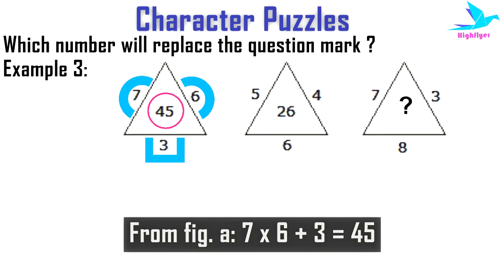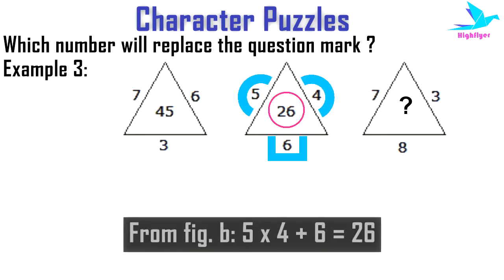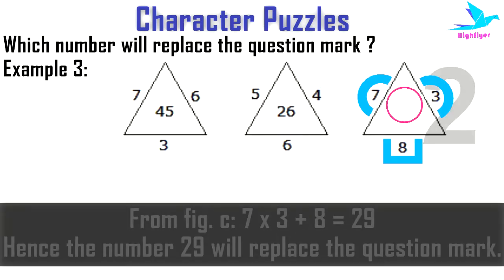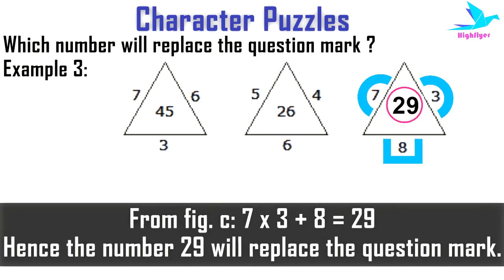Using this relation, in figure B it is 5 × 4 + 6 = 26. So in figure C the required number will be 7 × 3 + 8 = 29.